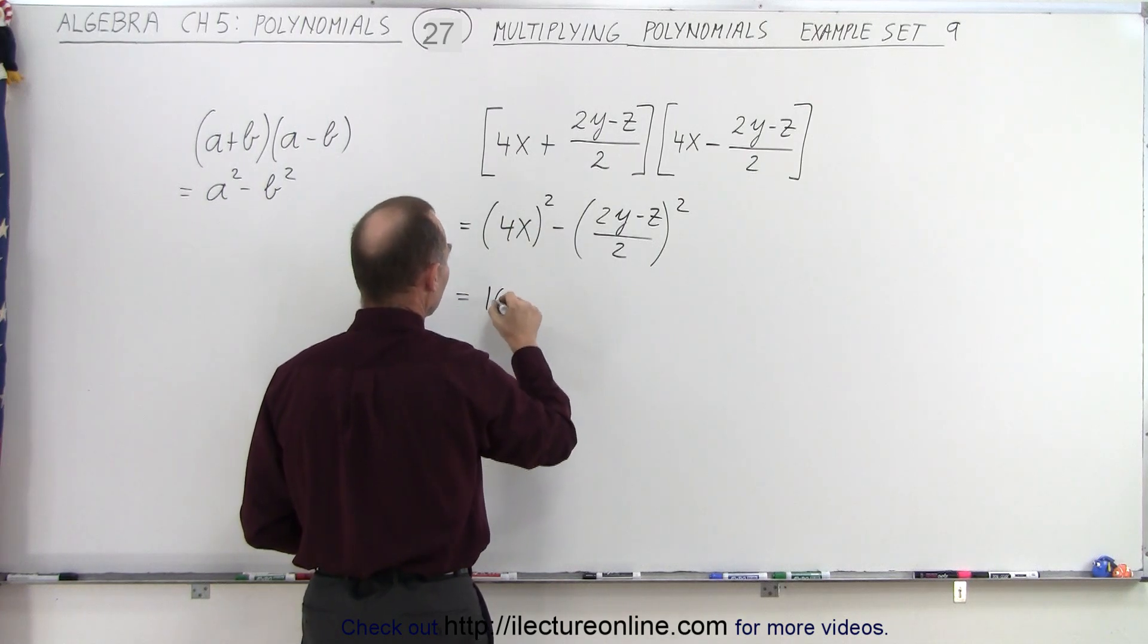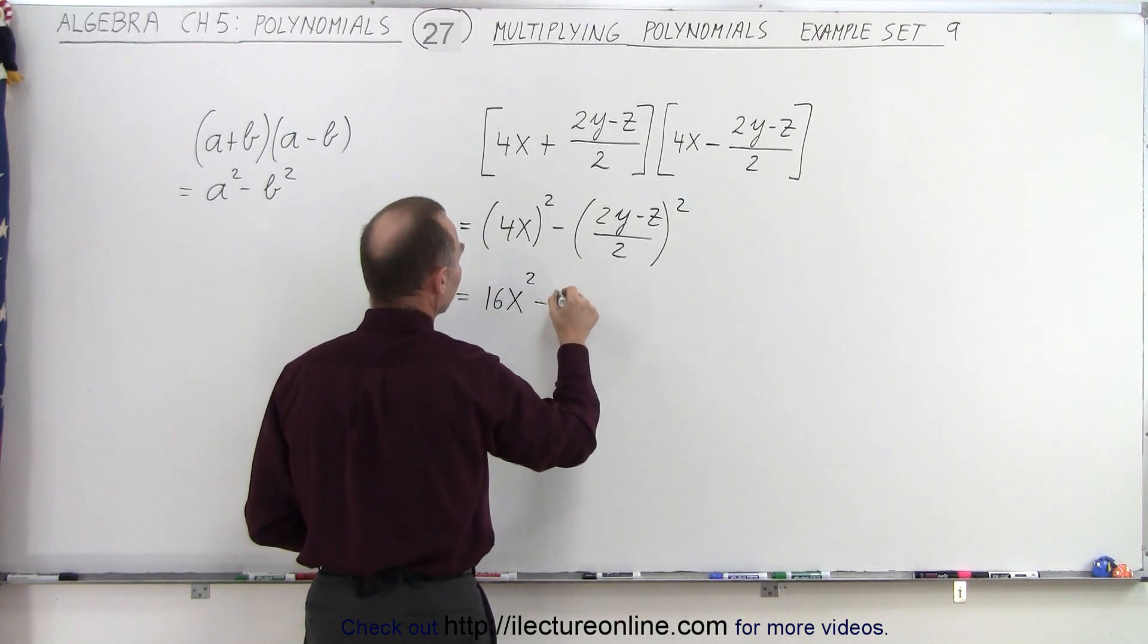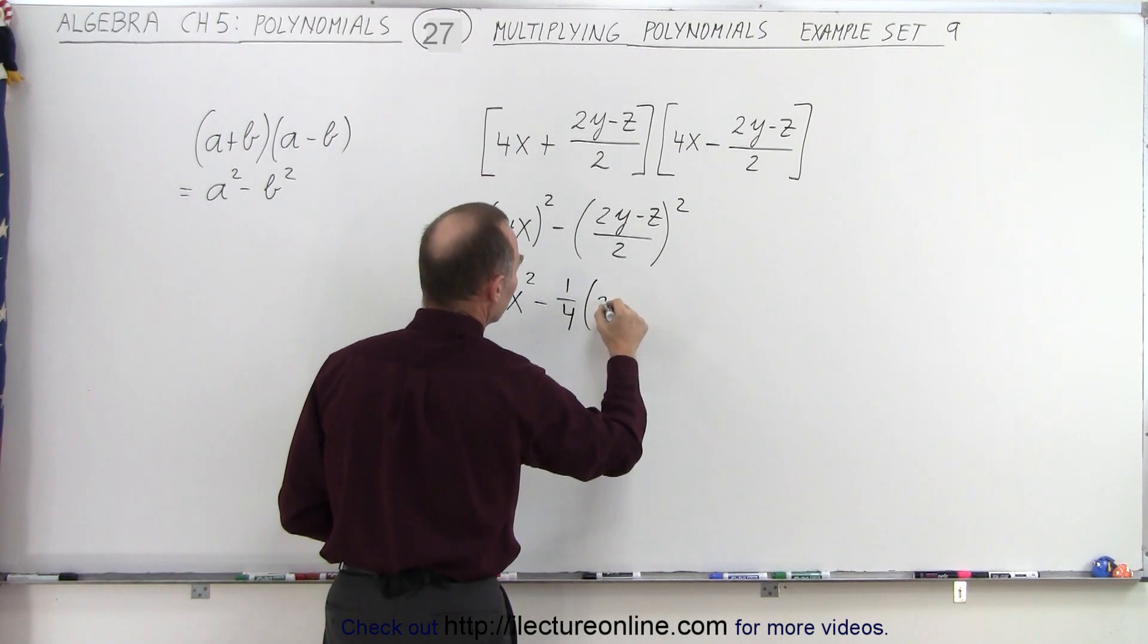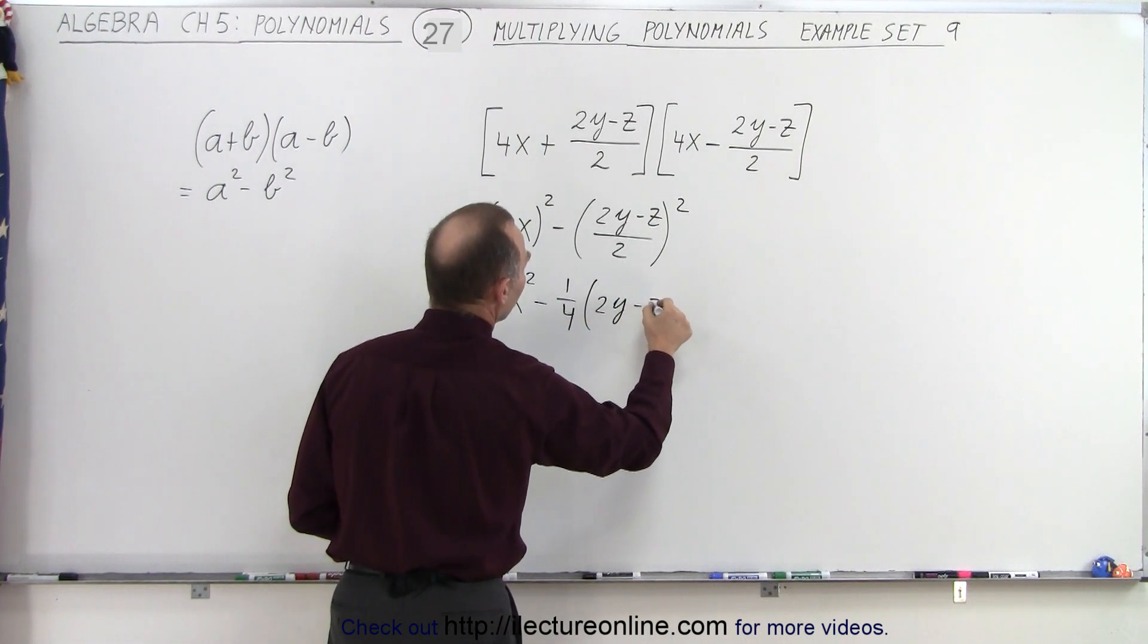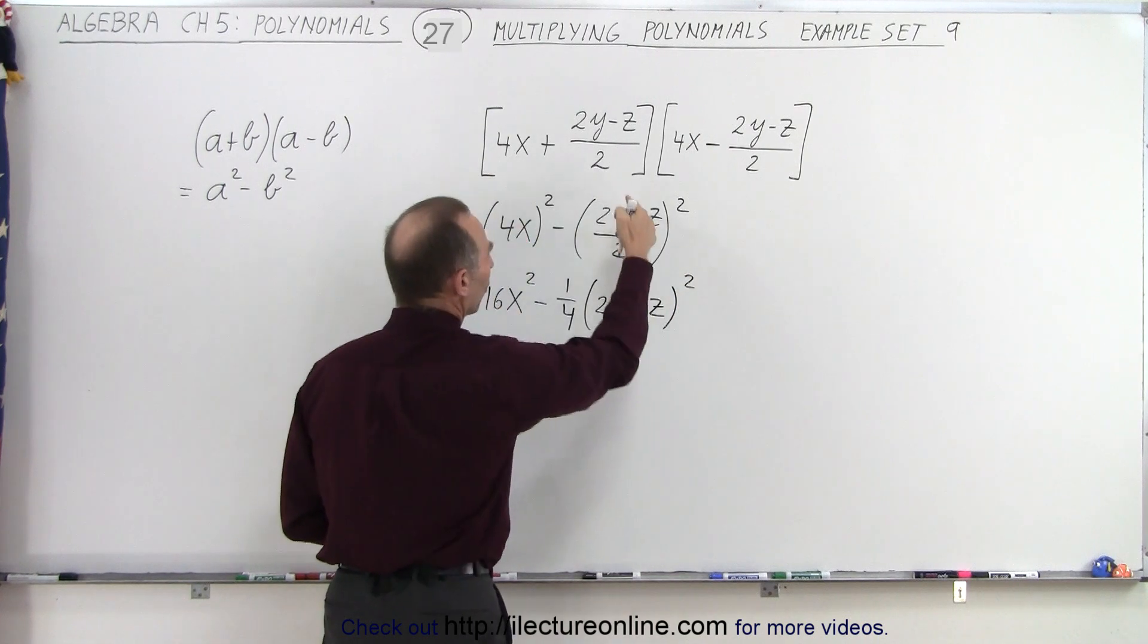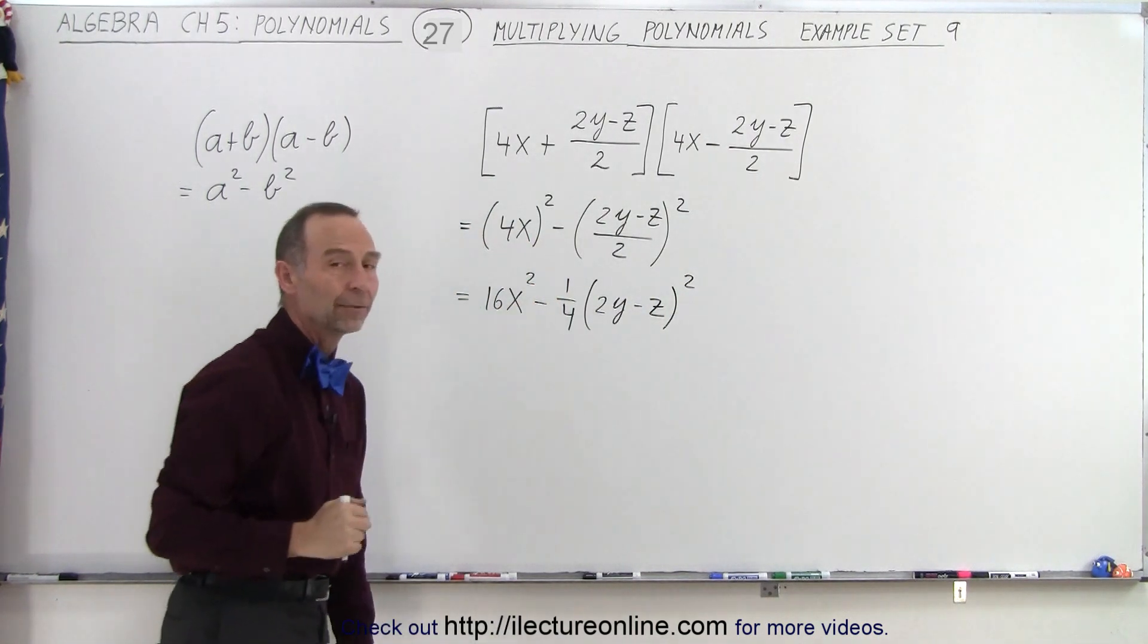if I square this, I get 16x squared minus 1 quarter. What we have left in the numerator, 2y minus z squared.